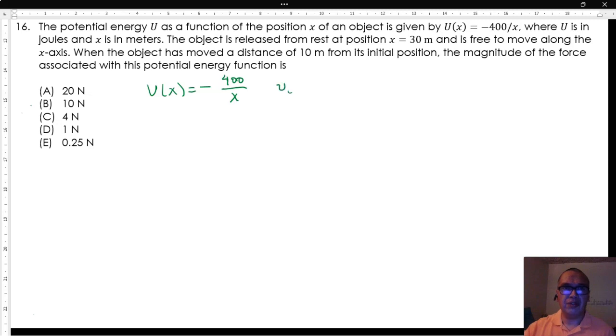The object is released from rest at position x equals 30 meters and is free to move along the x-axis. When the object has moved a distance of 10 meters from its initial position, the magnitude of the force associated with this potential energy function is...